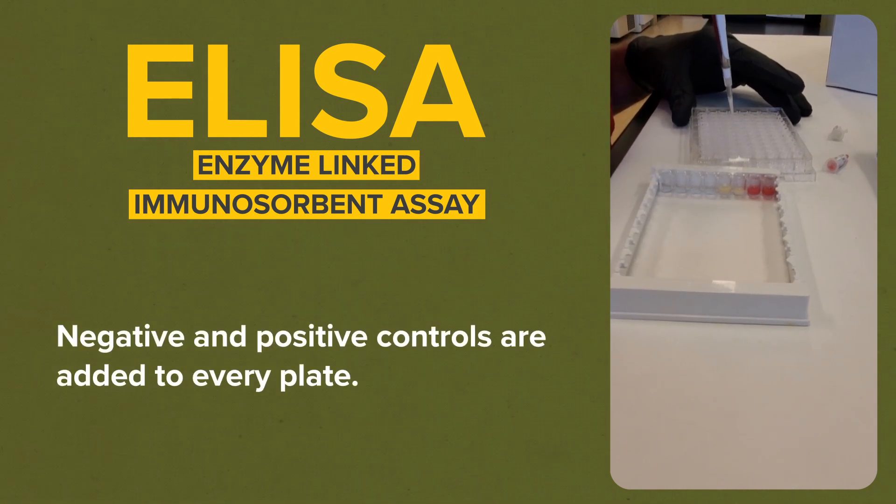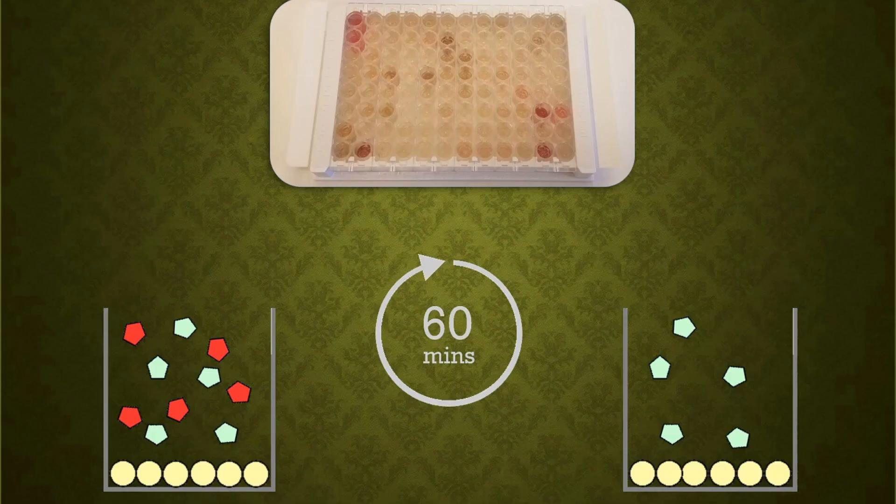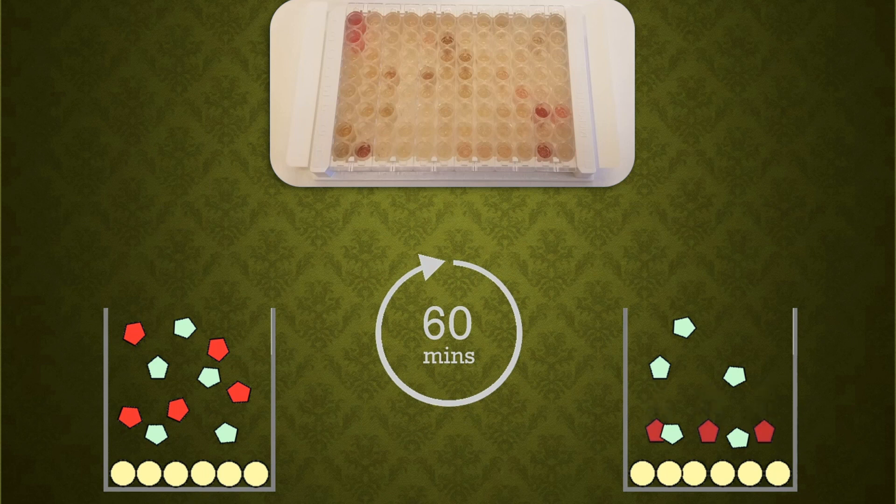We add negative and positive controls to every plate. The sample incubates for 60 minutes, and if the mutated CWD prion is present, it binds to the ligand on the plate.